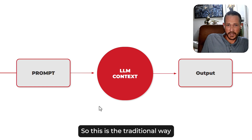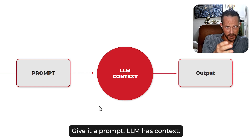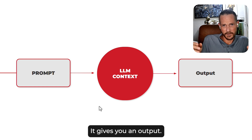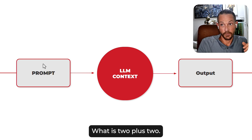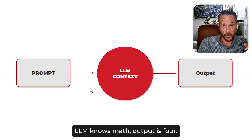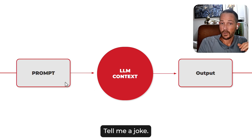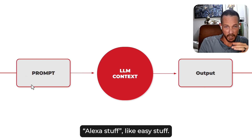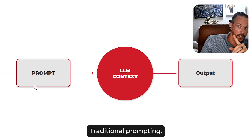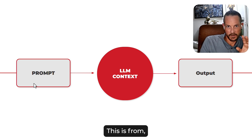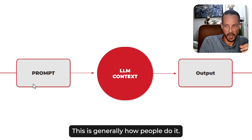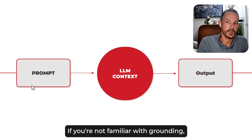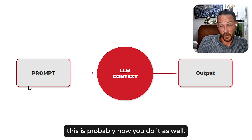The traditional way of prompting is: give it a prompt, the LLM has context, it gives you an output. It's a linear thing — it just goes along the line. What is two plus two? The LLM knows math, output is four. Write me a story, tell me a joke — easy stuff. Traditional prompting, from about two years ago until now, is generally how people do it. If you're not familiar with grounding, this is probably how you do it as well.